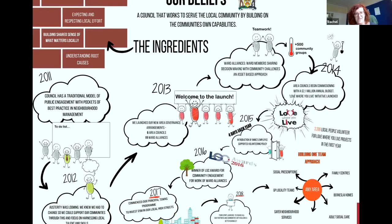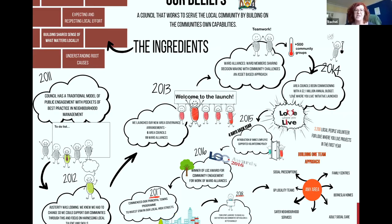I know this is a bit of a busy slide, but I'm quite pictorial with how I describe things, so it does tell you the journey. Starting in 2011, the council had a traditional model of public engagement with pockets of best practice in neighbourhood management. Going down to 2012, austerity was looming and we knew we had to do things differently.